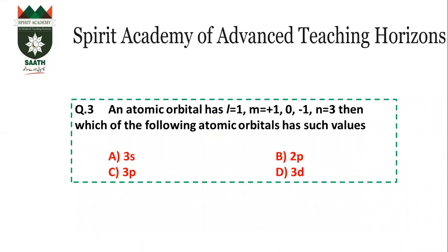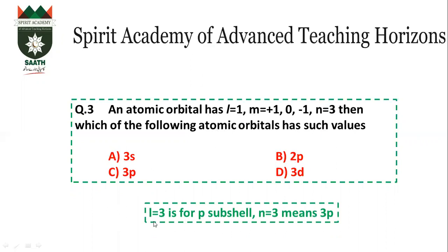Question number 3: An atomic orbital has L=1, M = +1, 0, -1, N=3. Which atomic orbital has such values? N value is 3, so it cannot be 2P because N should be 3. If L=1 then it is P subshell. So L=1 and N=3 means the answer is 3P. The answer is C.